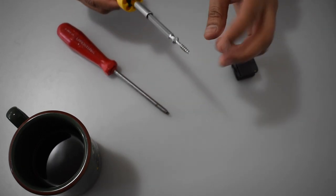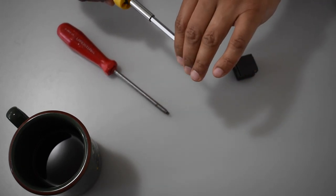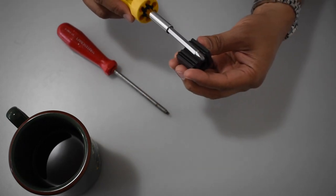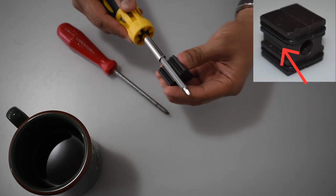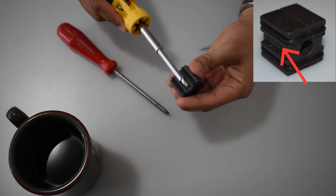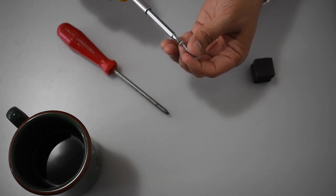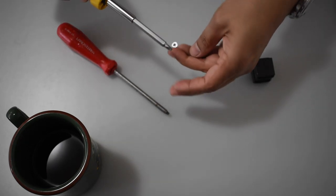Sometimes with the bit head, you prefer it not to be magnetized. And in that case, you can undo the magnetism by simply running it on the outside of the magnetizer and demagnetize the bit head.